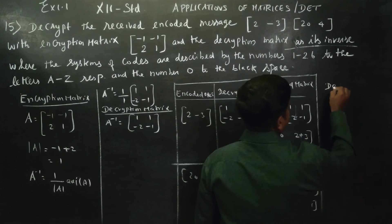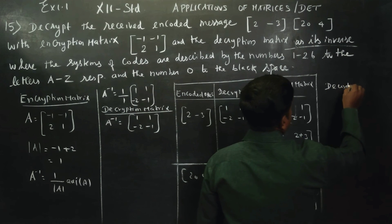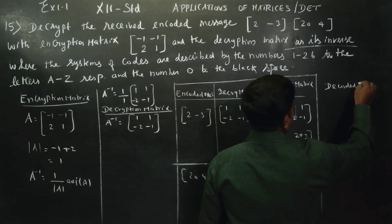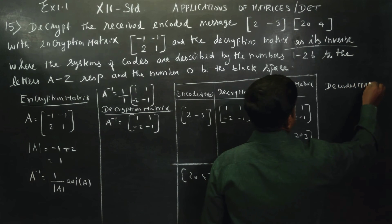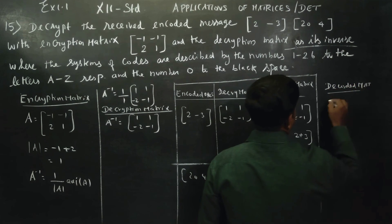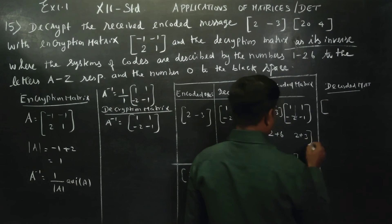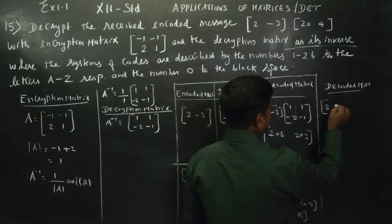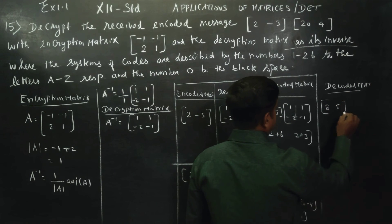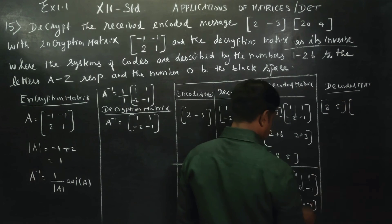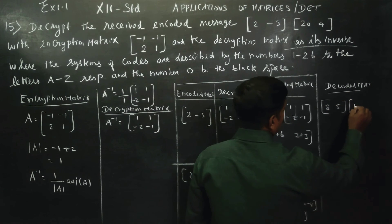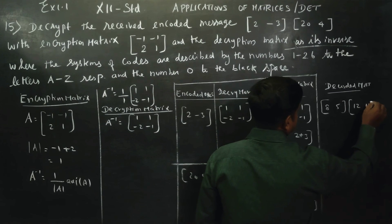Building the decoded matrix: the decoded answers are 8, 5 from the first pair, and 12, 16 from the second pair.